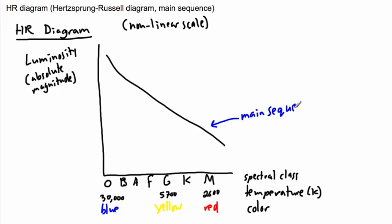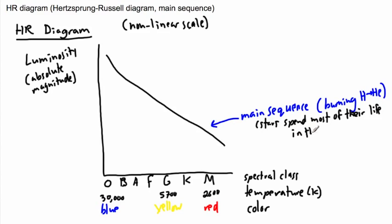And when stars are in the main sequence, that means they're burning, I've learned this before, they're burning hydrogen to helium in the core. So stars spend most of their life in the main sequence. Maybe actually we'll write that down. So stars spend most of their life in the MS, in the main sequence phase.